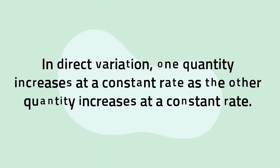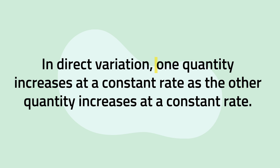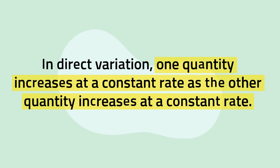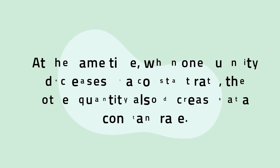In direct variation, one quantity increases at a constant rate as the other quantity increases at a constant rate. As one quantity decreases at a constant rate, the other quantity also decreases at a constant rate.